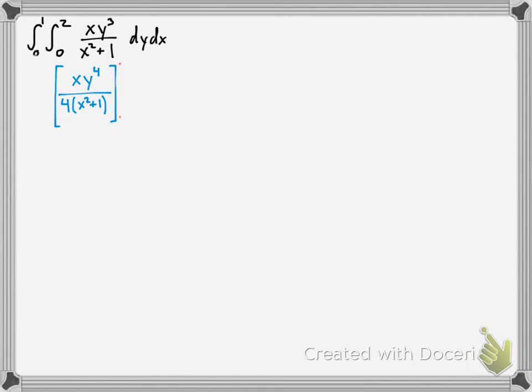So that means y cubed will become y to the fourth over 4. So I kind of did that down there. So I brought the fourth to the denominator. And then you evaluate that from the limits of integration, which are 0 to 2. Make sure you put the y there so you don't get confused.